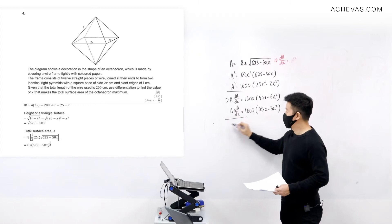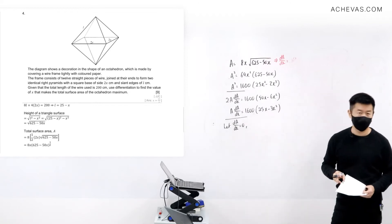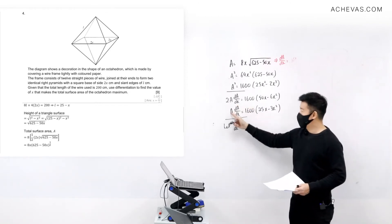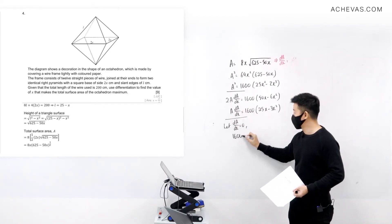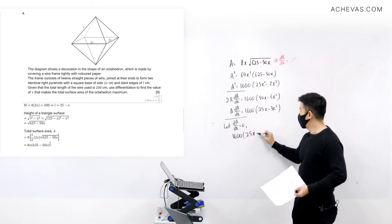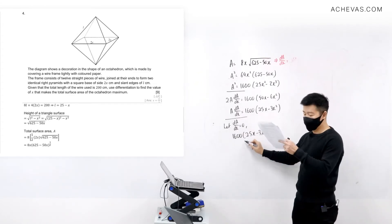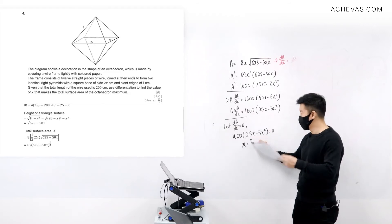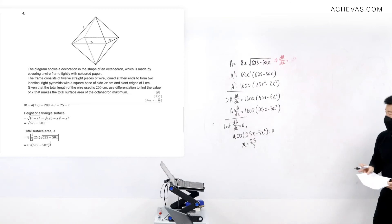And then from here I'm going to let dA/dx be equal to zero. I'm using exactly the same concept. So letting dA/dx be equal to zero, because A happened to be multiplied to this, so the whole thing will become zero. So I will have 1600(25x - 3x²) = 0.